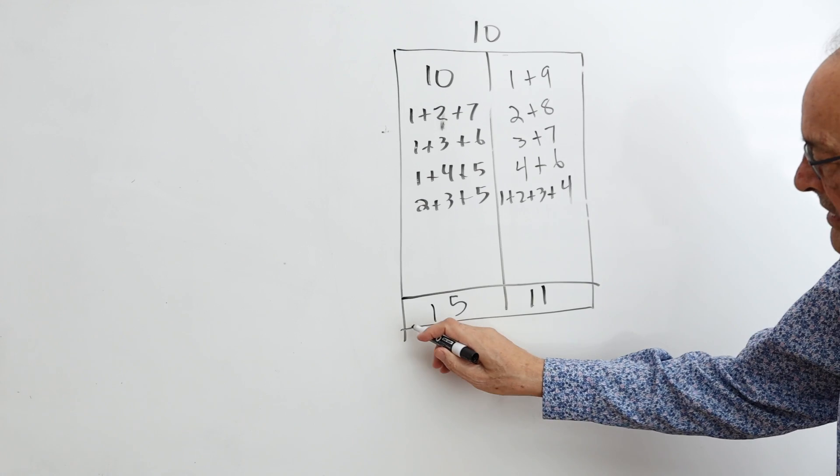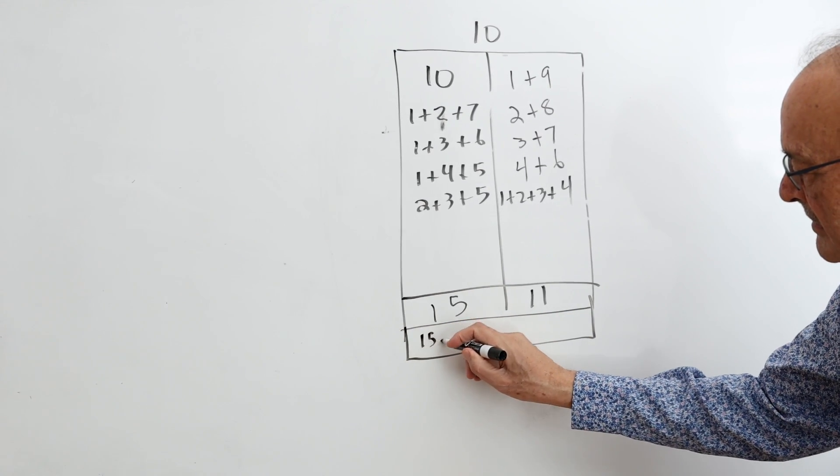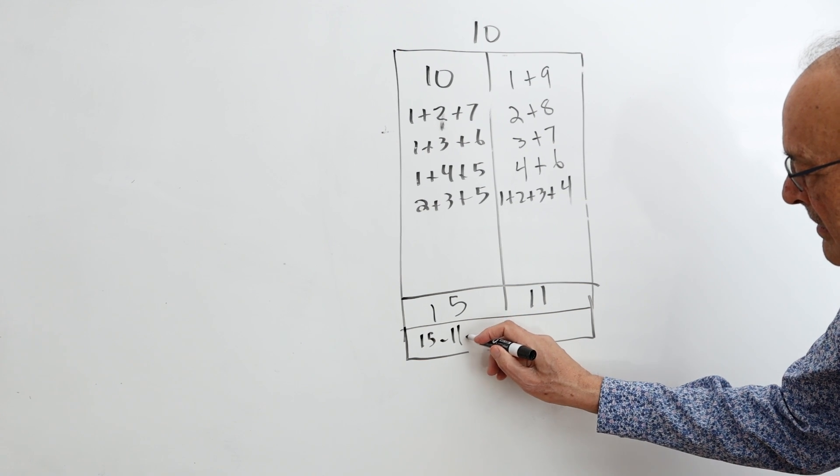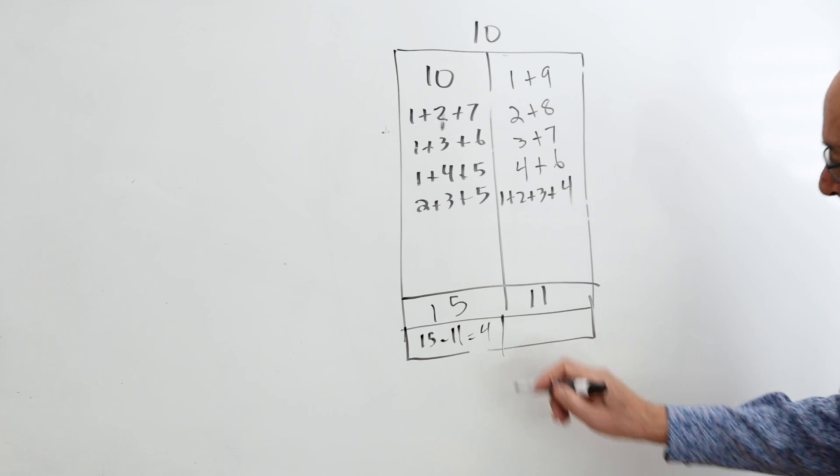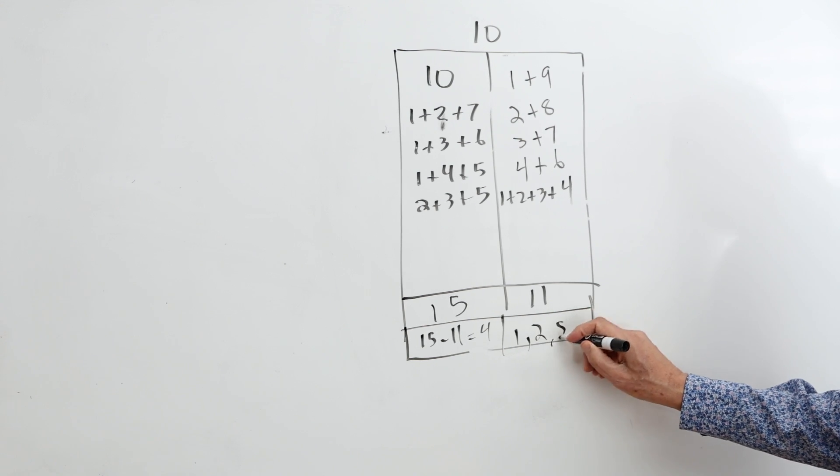So that means I do 15 minus 11 is 4. So I should have 4 factors again for 10, 1, 2, 5, and 10.